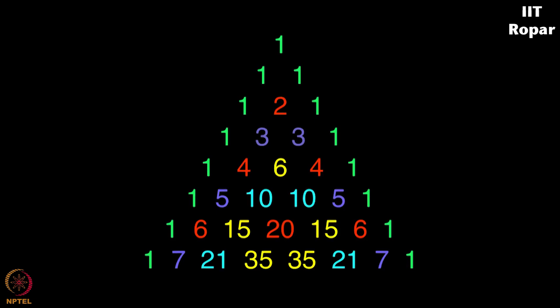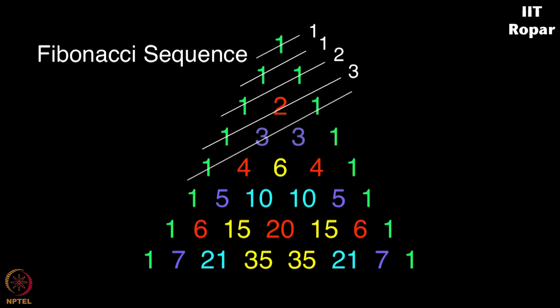We also see that the Fibonacci sequence is formed here. How? So you have a 1 here, a 1 here and then 1 plus 1 is 2 here, now 1 plus 2 is 3 here, 2 plus 3 is 5 here, so 1, 1, 2, 3, 5, 8 and so on. So the Fibonacci sequence is seen like this.